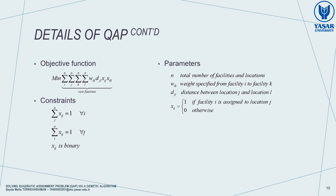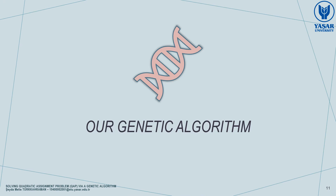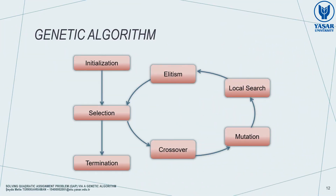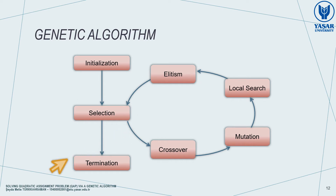Genetic algorithm is a population-based evolutionary algorithm. The algorithm originates from Charles Darwin's theory of natural selection. Looking at the general process of a genetic algorithm, we can see the big picture. Which methods did we use for each step? I will answer this question after explaining how we represent each solution of the QAP in our model. We call each solution a chromosome, or an individual.